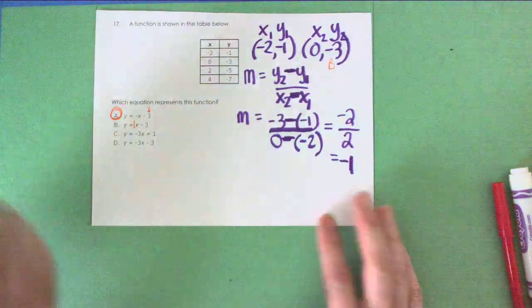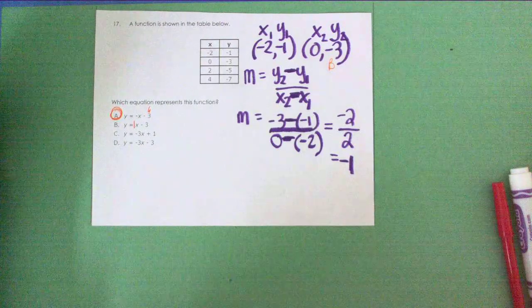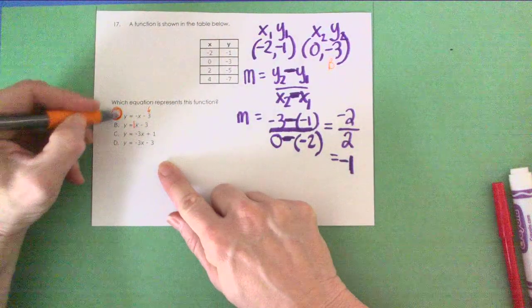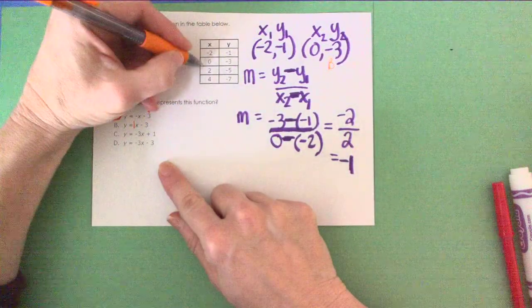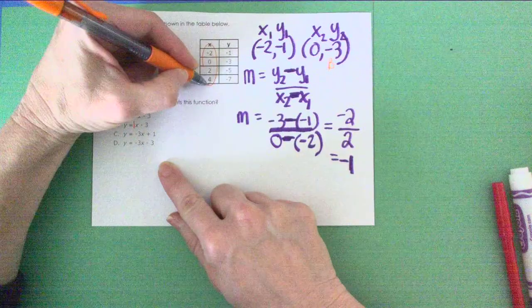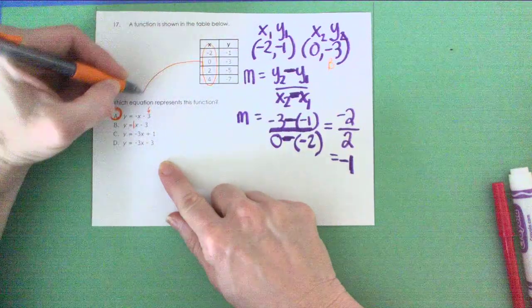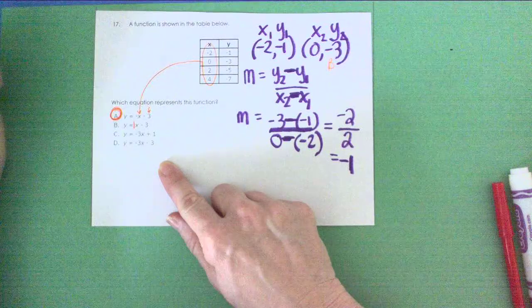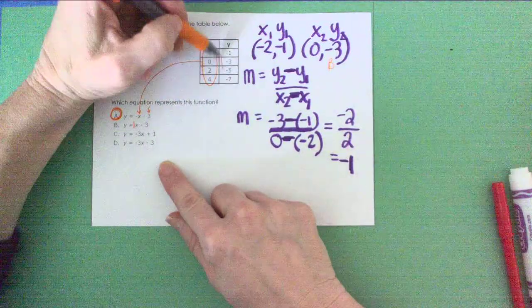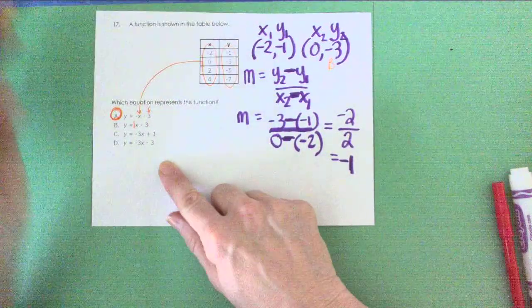Now another way to do it, you could have chosen letter A by plugging each of these x values one at a time in for x and seeing if the result was the y. I'll show you what I mean.